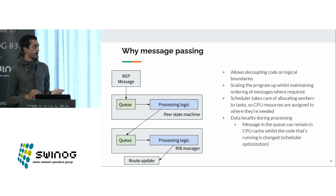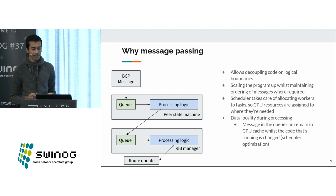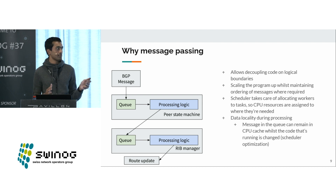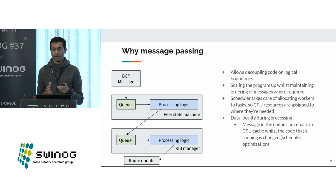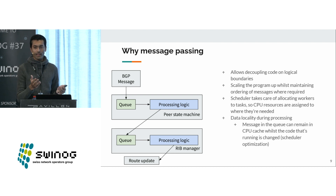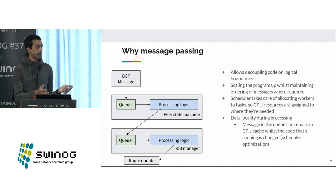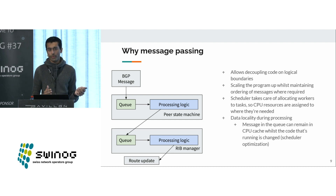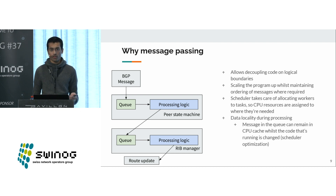I want to explain why I'm using a message-passing-based interface. I found it really easy to reason about the program when you have smaller units of logic. The peer state machine, for example, only deals with one peer — you don't need to care about the view of routes from other peers. It's very self-contained. The parser runs there, has some processing logic, applies the filters, and then hands the parsed and processed message out to the RIB manager. It can be running in a different thread, and this should give better scalability when processing a lot of incoming messages.